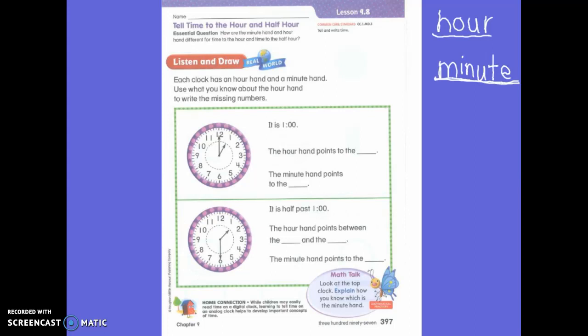Okay, so let's look at this clock first. When I look at a clock, I want to look at my hour hand first. Which one is my hour hand? The short one. You are exactly right, because remember, it is a short word, so I know that it is short. So I want to look at my hour hand first.